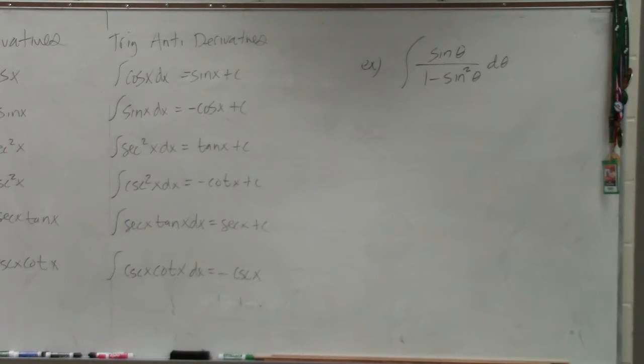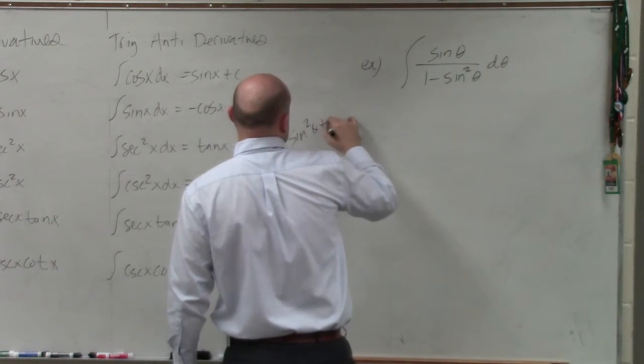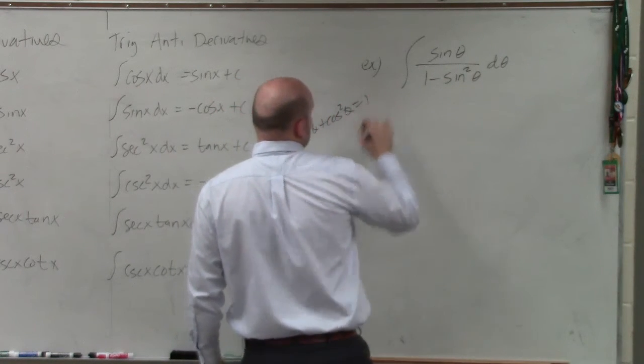All right. So if you guys look at your Pythagorean identity here, sine squared of theta plus cosine squared of theta equals 1.